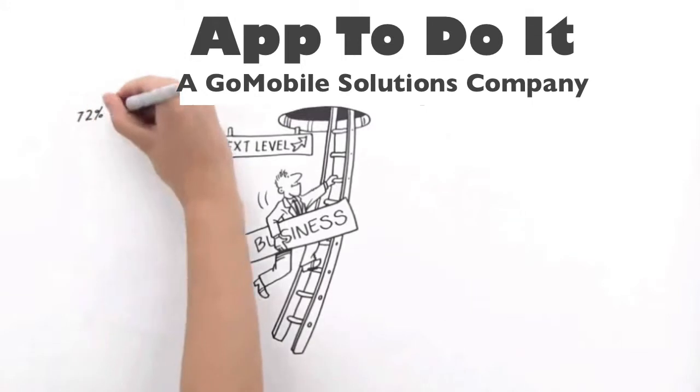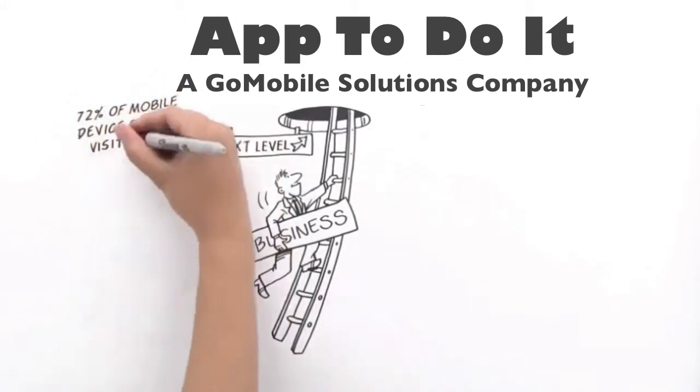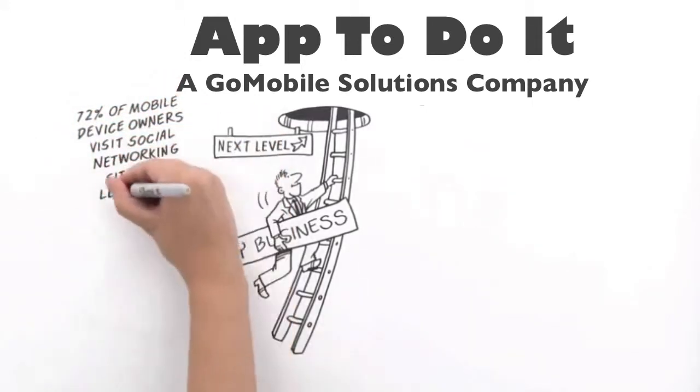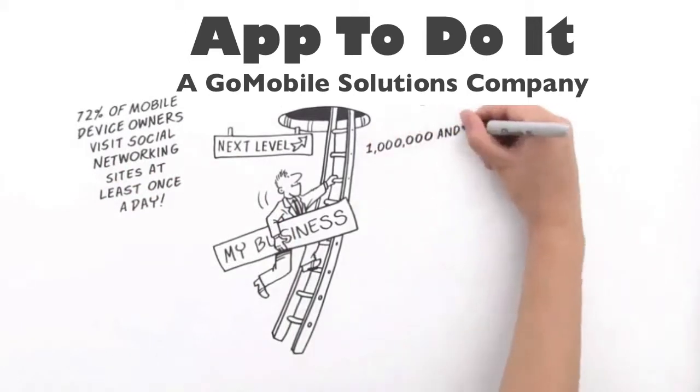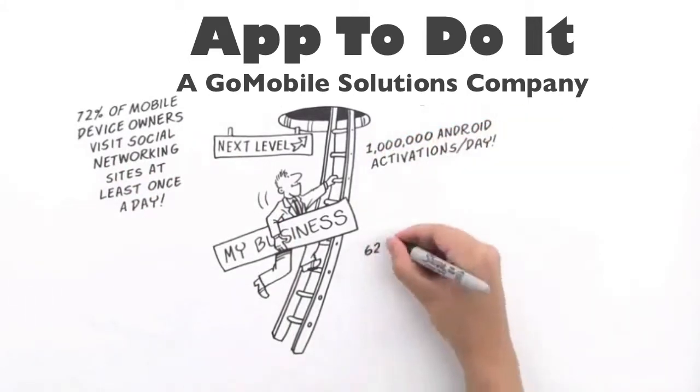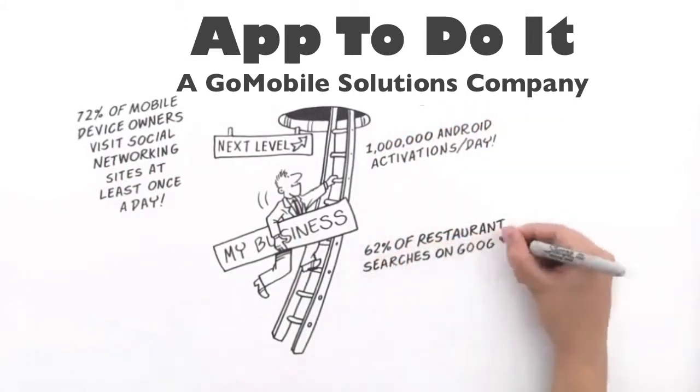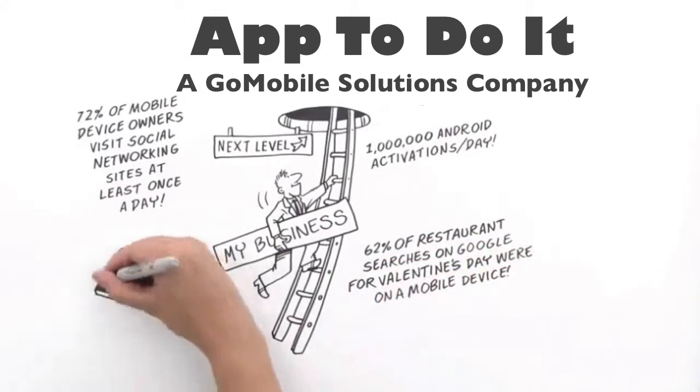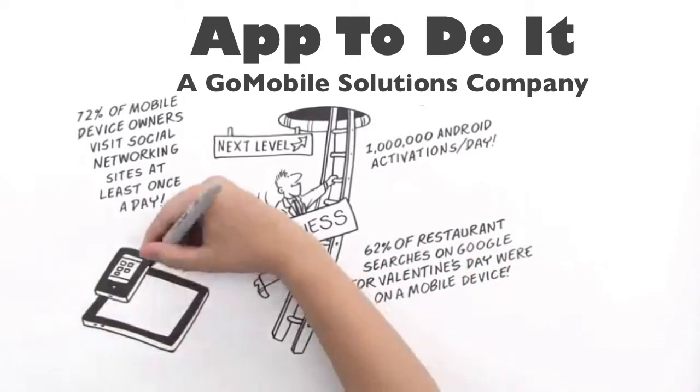Here are some facts. 72% of mobile device owners visit social networking sites at least one time per day. 1 million app activations a day. 62% of restaurant searches on Google for Valentine's Day were on a mobile device. Mobile devices and tablets are taking over.